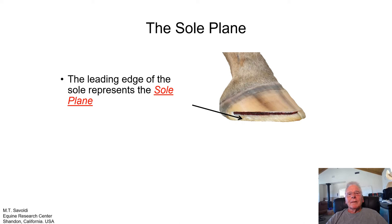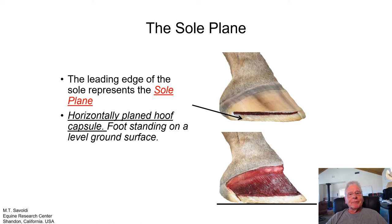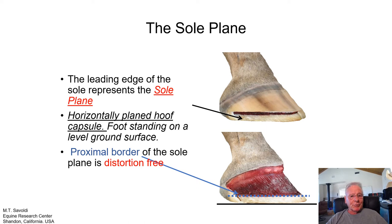The leading edge of the sole represents the sole plane. The capsule is very flexible, so when it flexes the sole plane will flex with it. A horizontally planed capsule with the foot standing on a level ground surface is ideal for protecting the internal structures and the P3 bone and its leading edges. The proximal border of the sole plane being distortion-free is the take-home message: we must do our best to maintain a distortion-free sole plane for internal bone health.